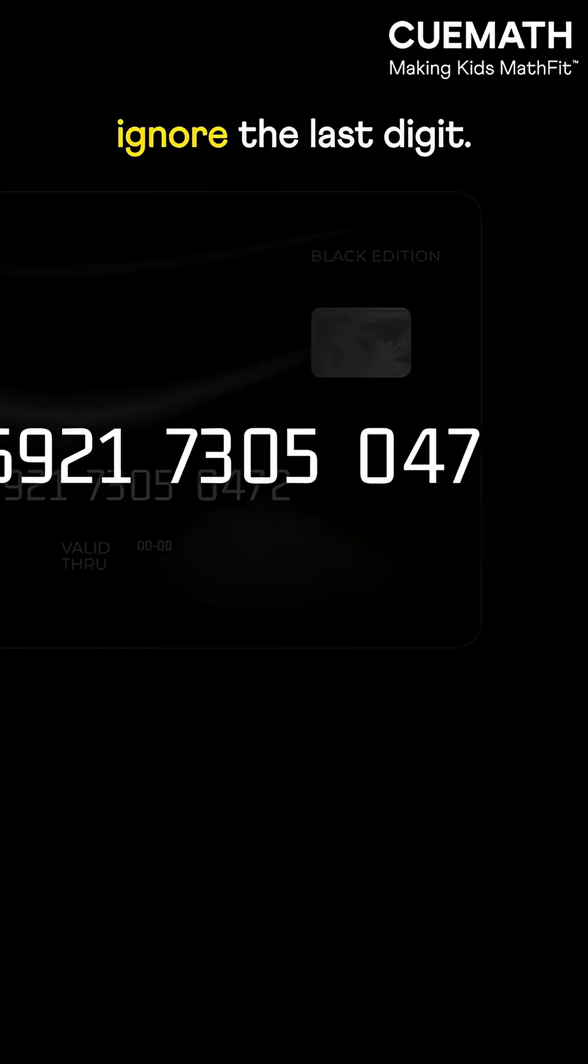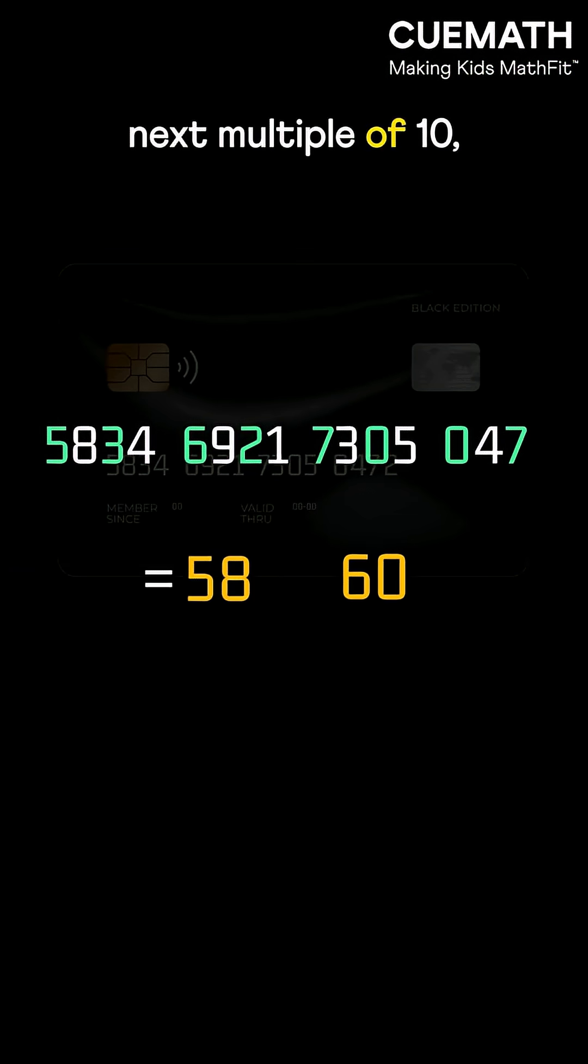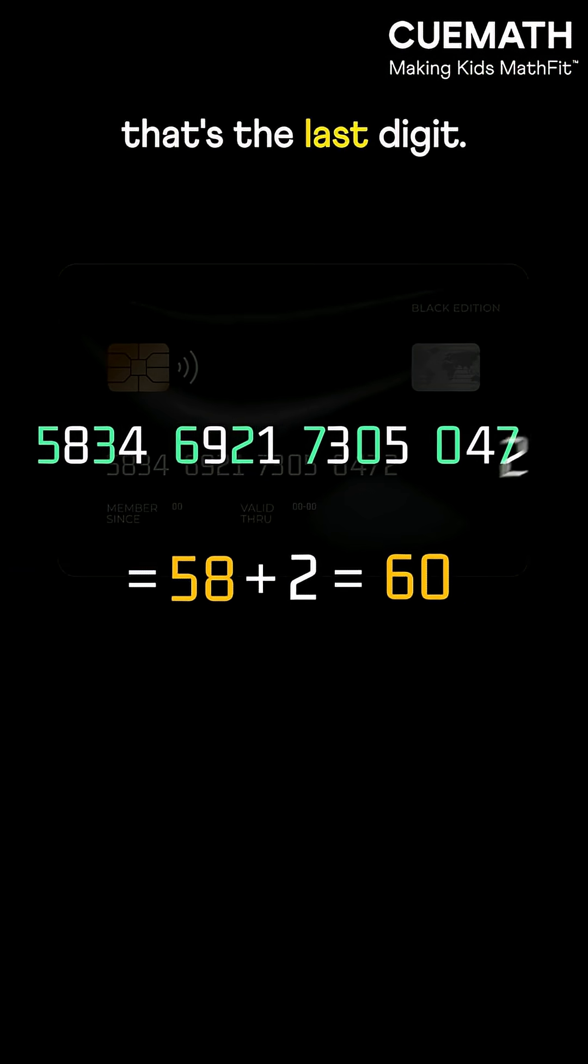Now take this one. Ignore the last digit. From the right side, double the alternate digits, write the others as they are, and add them. To reach the next multiple of 10, add 2. That's the last digit.